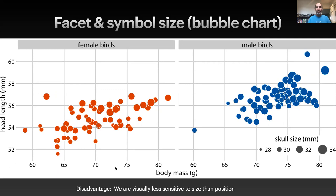One disadvantage of facets is that it can be harder to compare information from one panel to another panel. It's always easier to compare information within a plot than across plots. Another thing this figure shows is the idea of using symbol size to represent some continuous variable, and that's sometimes referred to as a bubble chart. So here we can see that we're using the size of the circle to represent skull size.